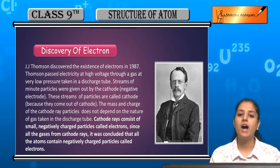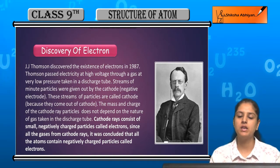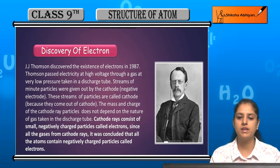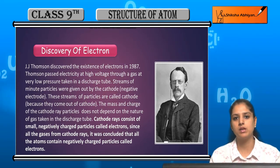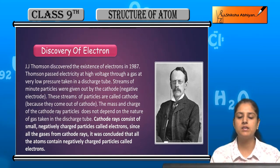High voltage electricity was passed to the discharge tube. When electricity passed, the cathode rays are produced.